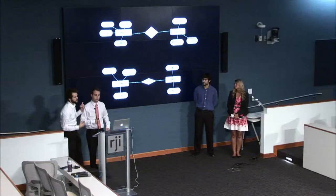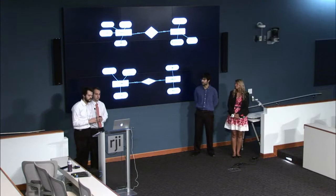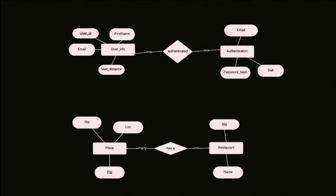This is our database ERD. As you can tell on the bottom, we have restaurant, which has a one-to-many relationship with place. McDonald's is just McDonald's, but has different locations. In the location data variable in place, that's where we store all the latitude and longitude — that's where we grab the specific locations from.